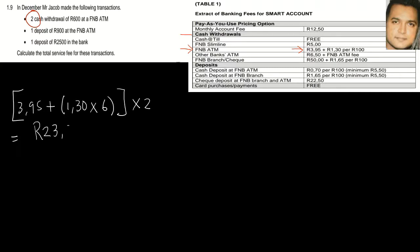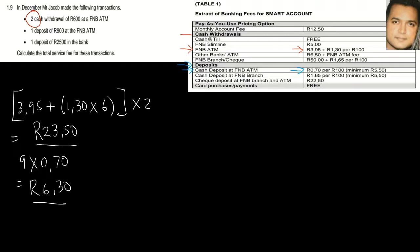The second part of question 1.9 involves one deposit of R900 at an FNB ATM. Looking under deposits at the FNB ATM row, the fee is 70 cents per R100. There are nine hundreds in R900, so it's 9 times 70 cents, giving us R6.30.